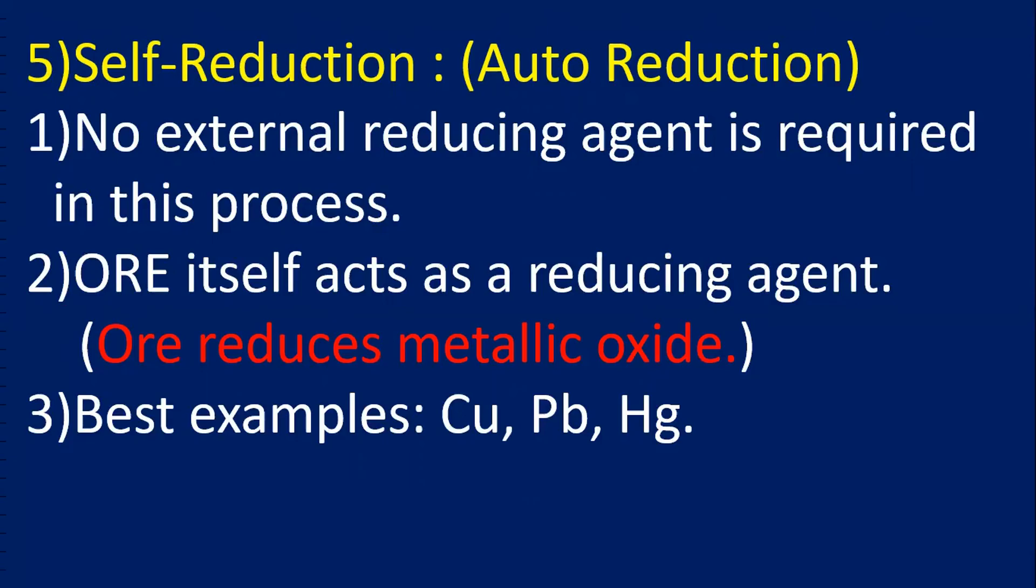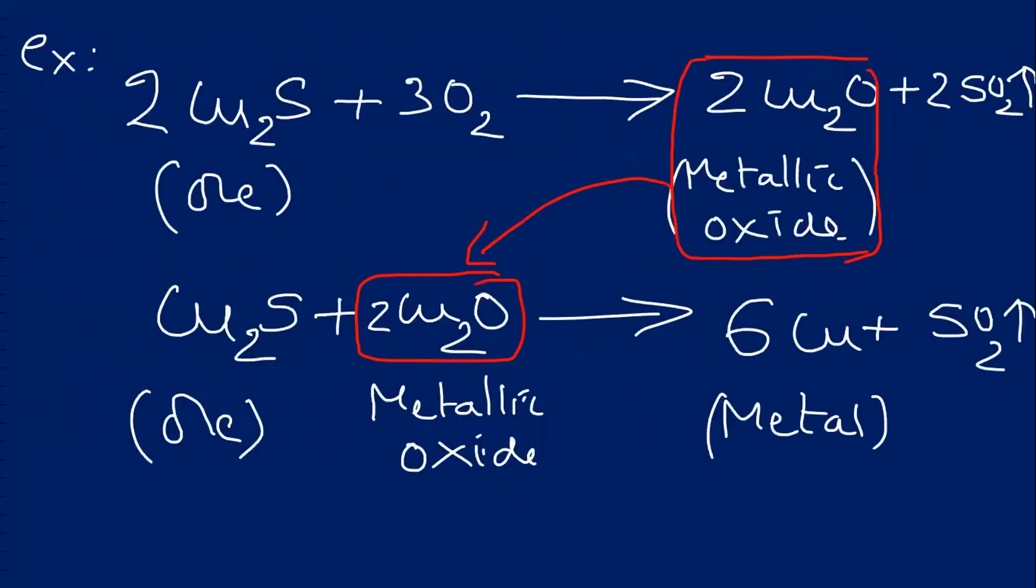The best examples are copper and lead and also mercury. Let us take first copper. Cu2S. This is oxidated, we get Cu2O. But we want copper. How do we get copper? Need not add any reducing agent. The ore itself reduces the Cu2O again into copper. So it is called self-reducing agent. This is self-reduction.